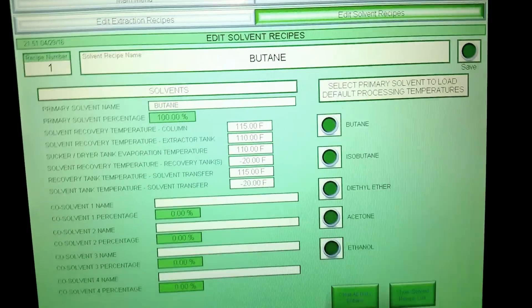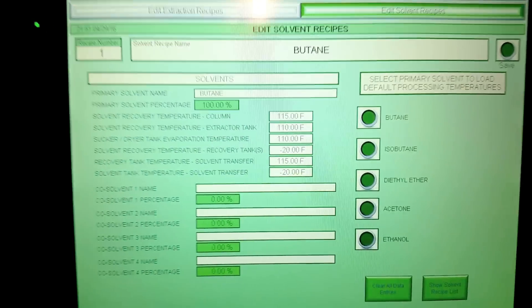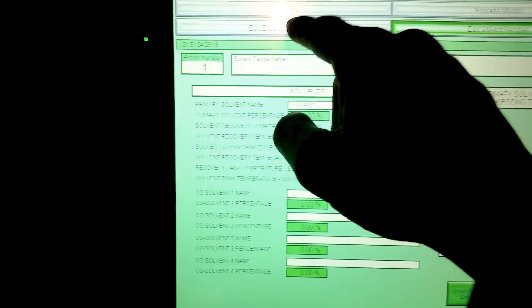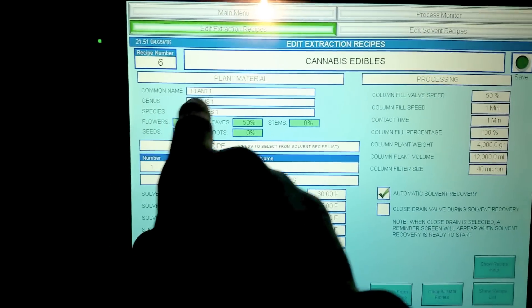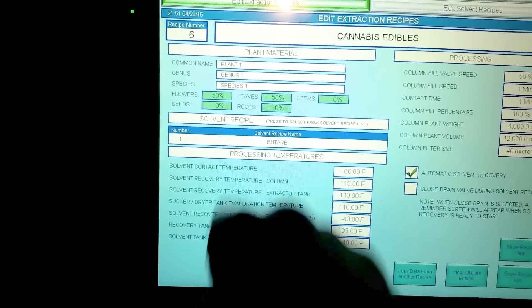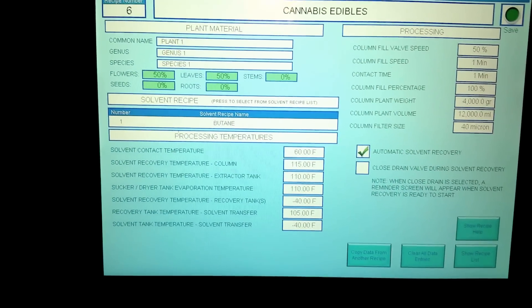You can hit one of these buttons and it'll load all the values that you need for that solvent. Go back over to extraction recipe and now you can import that solvent into this recipe by clicking that area and it'll change it.